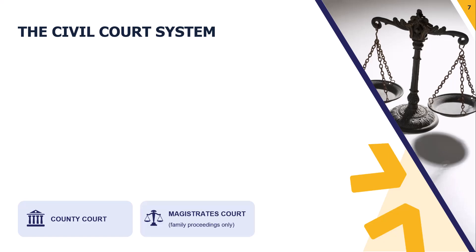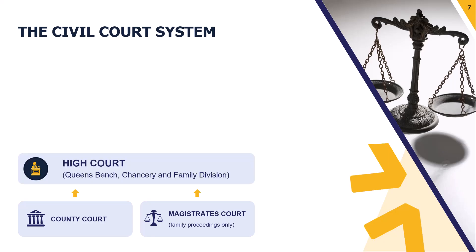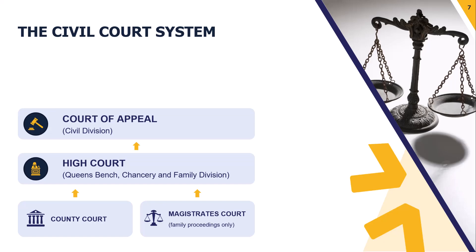Another option is the magistrates court, though for civil cases this is less common — family proceedings only. From there we move into the High Court, which has the Queen's Bench Division, the Chancery, and the Family Division. The Queen's Bench can deal with both civil and criminal cases. The Chancery covers contract law and company law. If you went to the magistrates and weren't happy with the result, you could appeal to the High Court's Family Division. From there you can go to the Court of Appeal, which has a civil division and a criminal division.